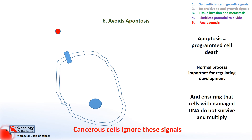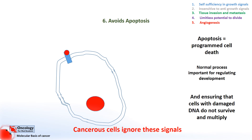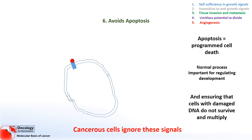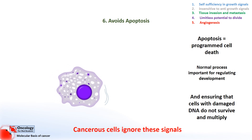Apoptosis is triggered by events either inside or outside the cell — for instance, DNA damage inside the cell, or a lack of nutrients or growth factors outside the cell. This activates a cascade which leads to the cell destroying itself. The cell is then cleared up by another cell called a macrophage.